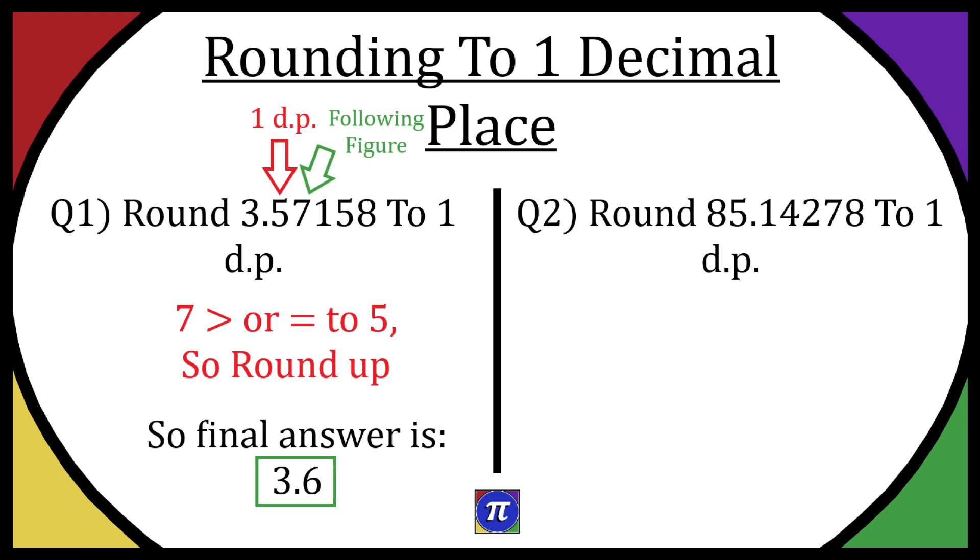Now if we were to round down, we just keep it as the same, so that'd be 3.5. For example, if we had 3.54, we'd round it down to 3.5. Hopefully that made sense. I'm going to jump on to the second one now, leave a comment if you have any questions.